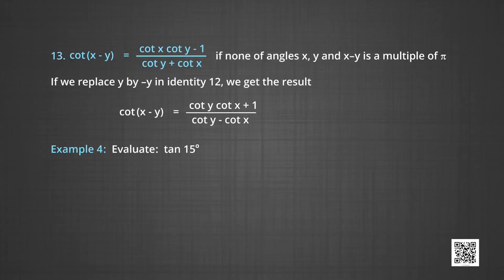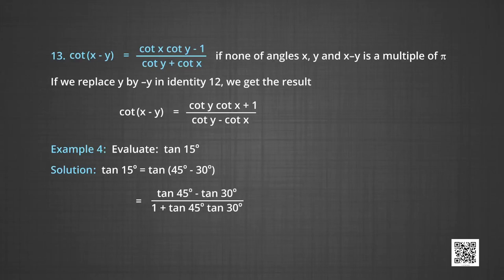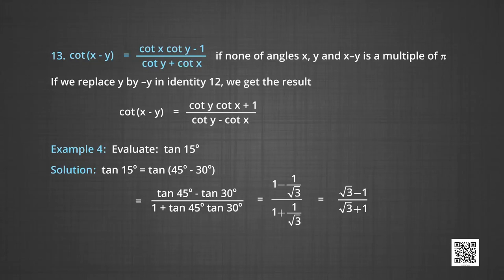In Example 5, we evaluate tan 15°. Tan 15° = tan(45° - 30°) = (tan 45° - tan 30°)/(1 + tan 45° tan 30°). With tan 30° = 1/√3 and tan 45° = 1, we get tan 15° = (1 - 1/√3)/(1 + 1/√3).